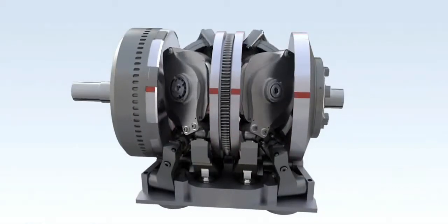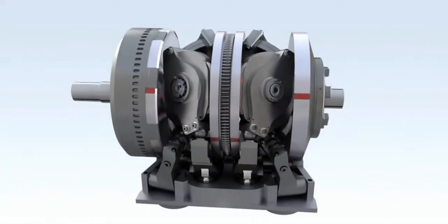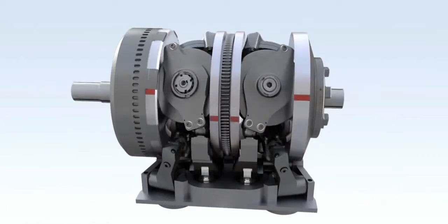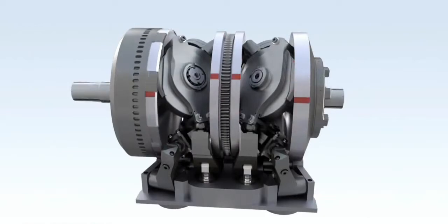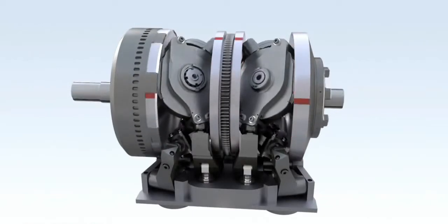The full toroidal variator is the core of Torotrax technology. This animation will show how a typical variator is constructed and works, based upon a twin-cavity, six-roller configuration.